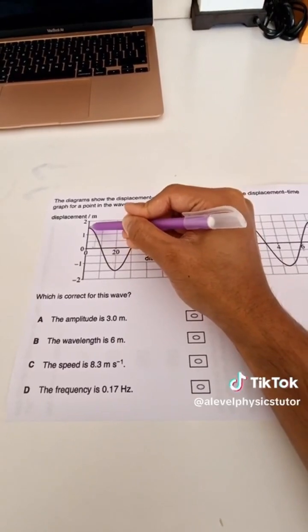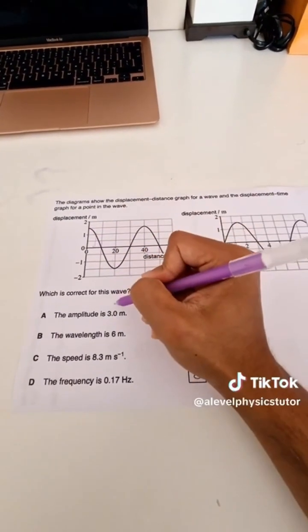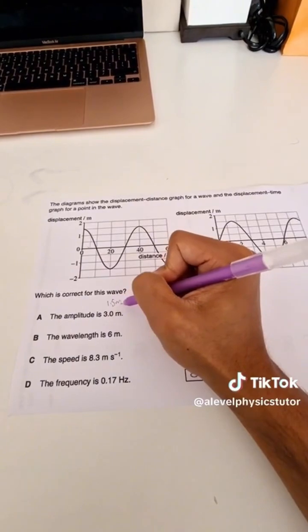So in this case, the distance from 1.5 to 0 is 1.5 meters, so the amplitude is actually 1.5 meters, meaning this is incorrect.